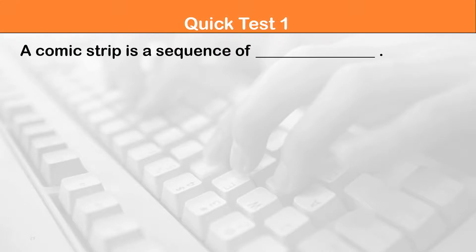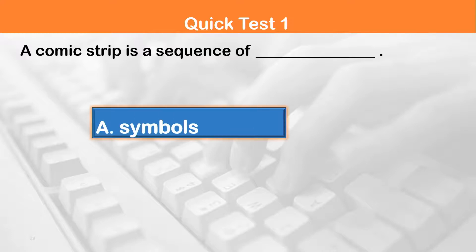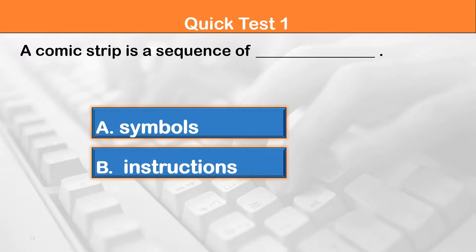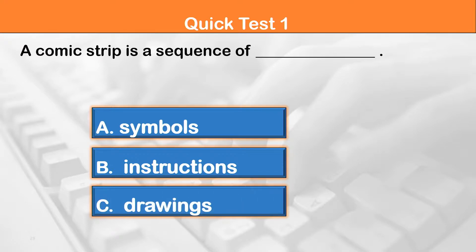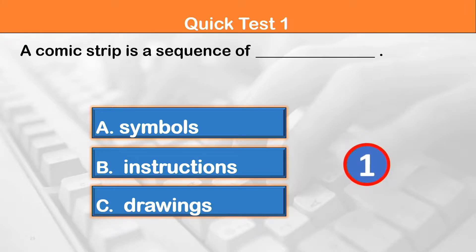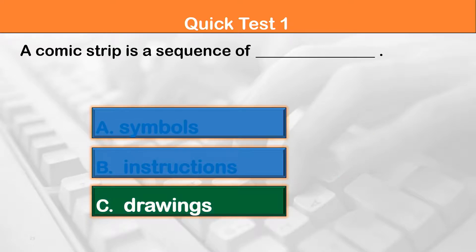There will be some multiple choice as well as some true-false questions. Read the questions carefully — you will have a few seconds to give your answer. Question 1: A comic strip is a sequence of — option A: symbols, option B: instructions, or option C: drawings. The correct answer is option C. A comic strip is a sequence of drawings.